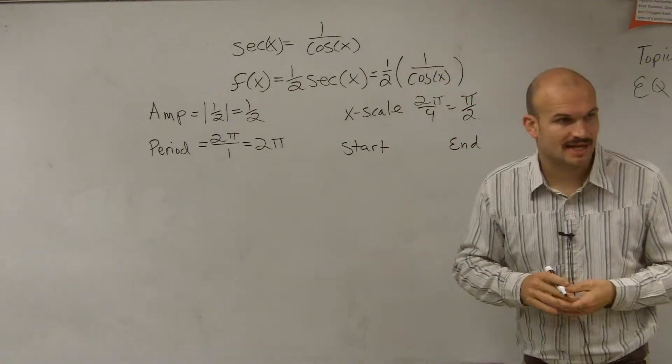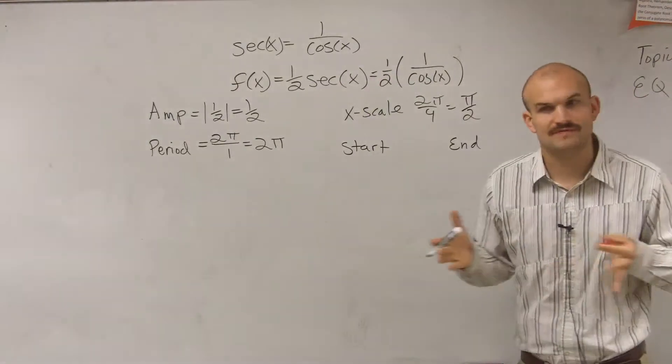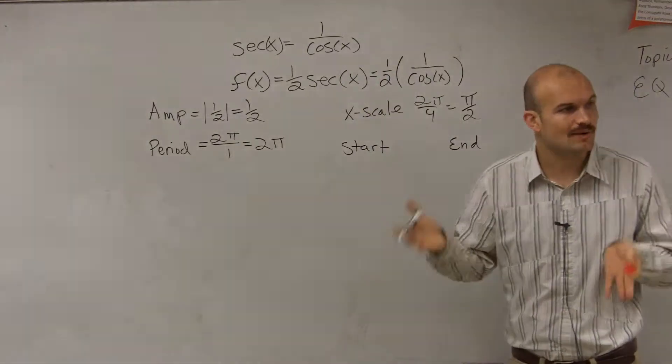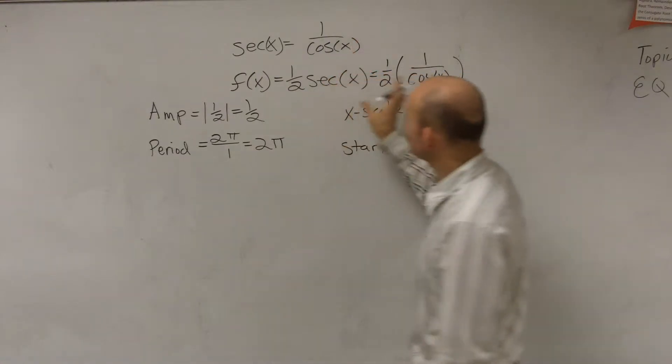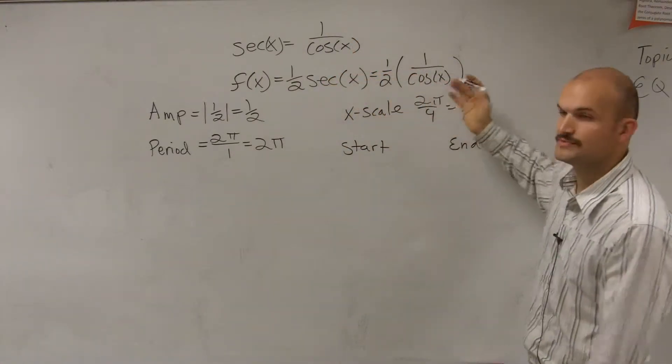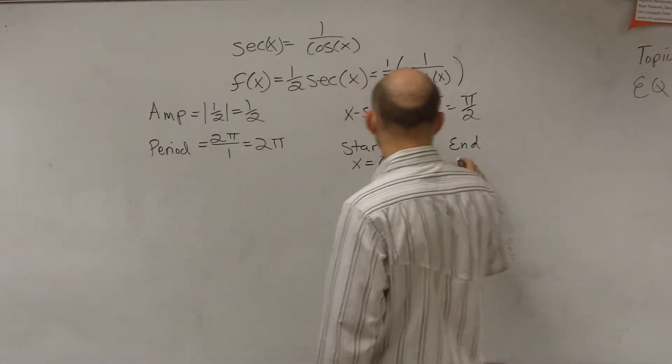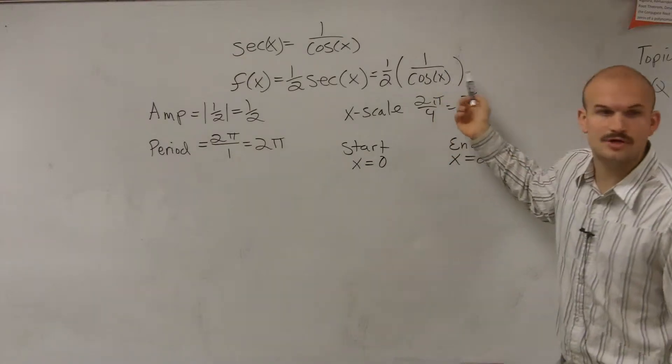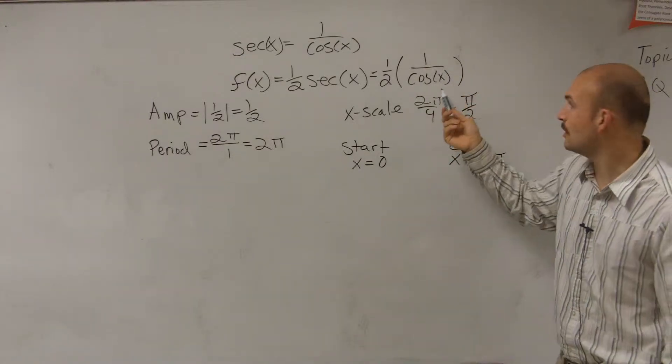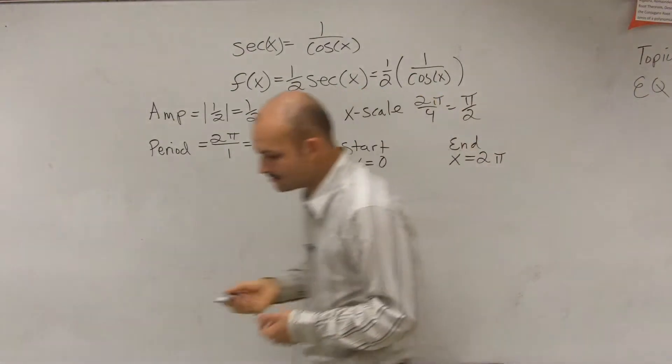So then we have the start and the end. The start and the end, remember, if there's any kind of phase shift, that's going to affect how we're going to graph our initial period. So all we do for that is we take whatever's inside of our function, which was bx minus c. In this case, we just have x. So for our sine and cosine, we're just going to set those equal to 0 and equal those to 2 pi. Since I have no changes in my period or any changes as a phase shift, my start and my end are going to be the exact same as the parent graph.